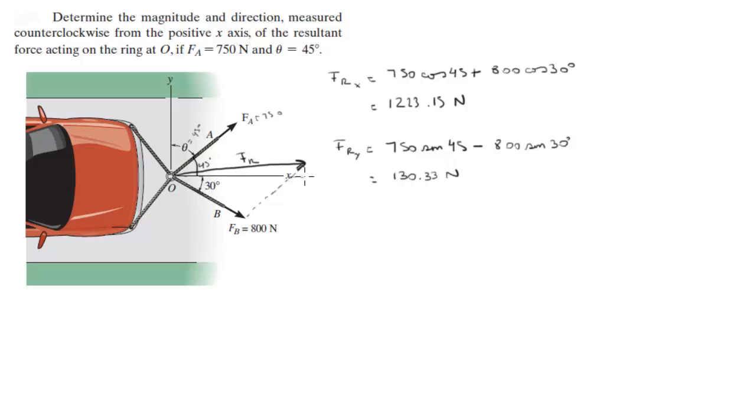So you can see that more or less my estimation was correct. Now we've got to find the magnitude of F_r. The magnitude of F_r is equal to the square root of 1233.15 squared plus 130.33 squared, and that gives you 1230.1 Newtons.